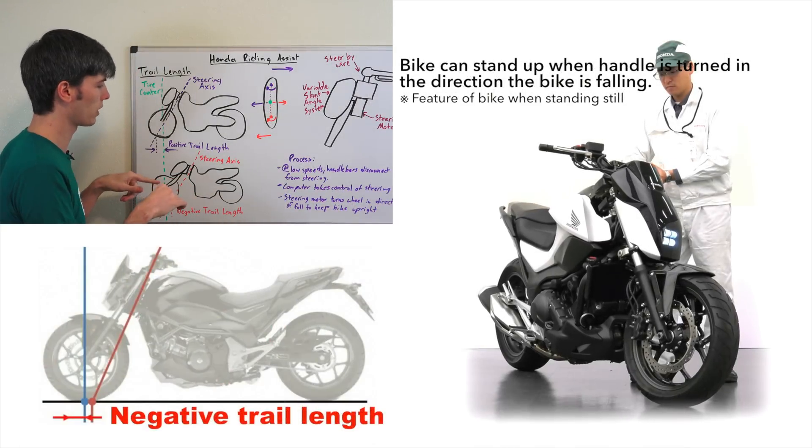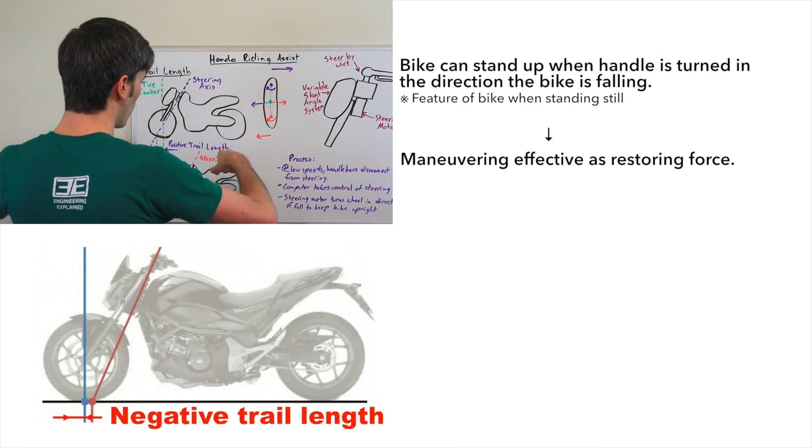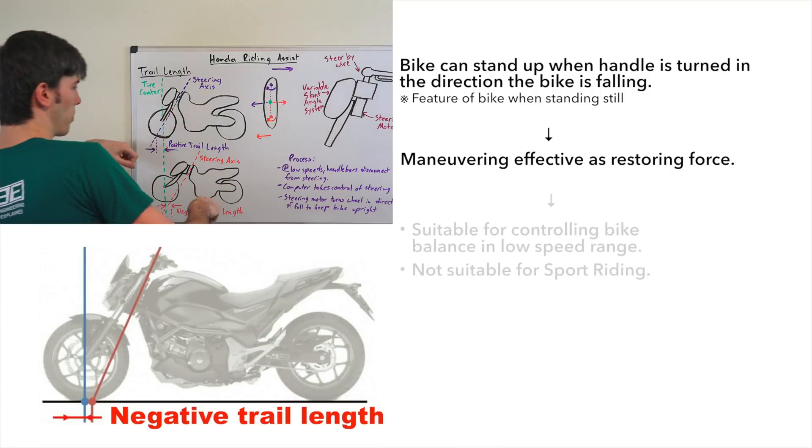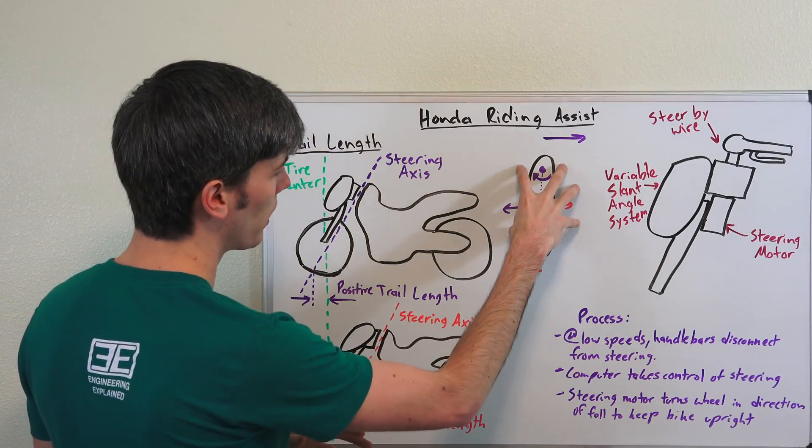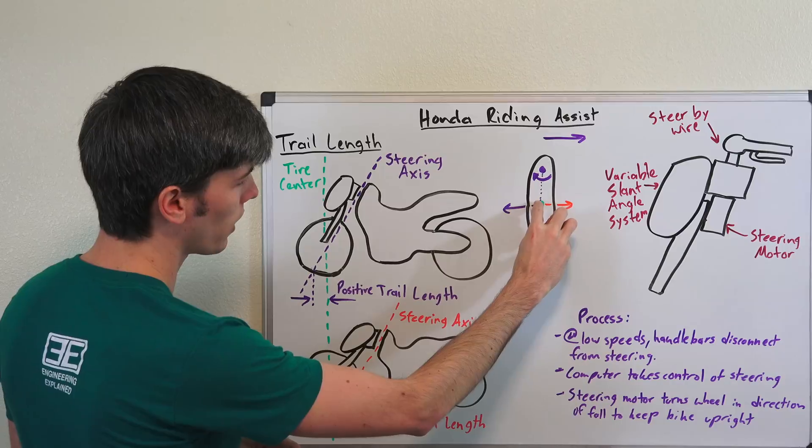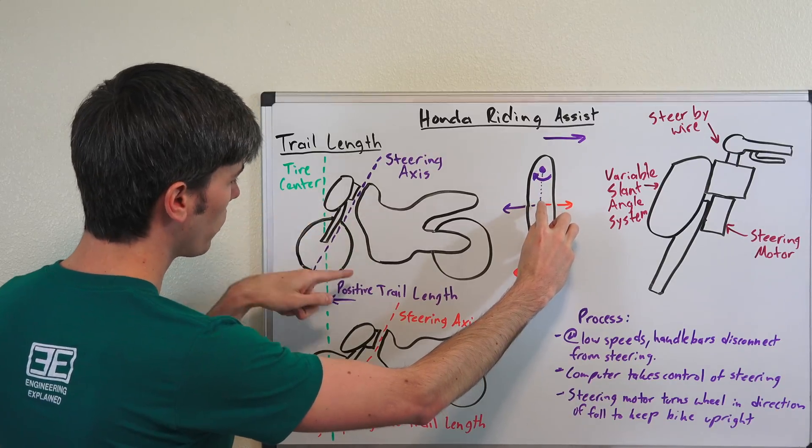If you turn a negative trail length bike to the right, it's going to want to push you out the other way. To understand how that works, we're looking down on top of the tire.